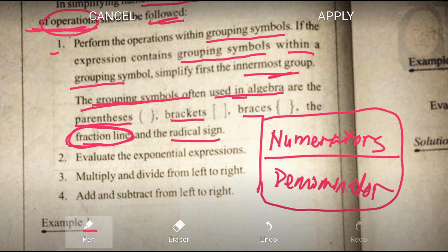Uulitin ko, the grouping symbols often used in algebra are the Parenthesis, brackets, braces, and the fraction line, and the radical sign. Ngayon, next, evaluate the exponential expression. Nasa step number 3 lang si multiply and divide from left to right. Then, step number 4, add and subtract from left to right.